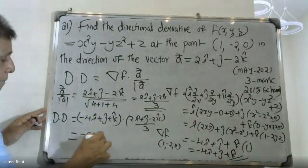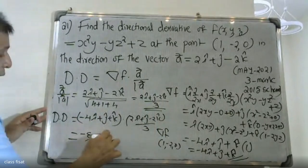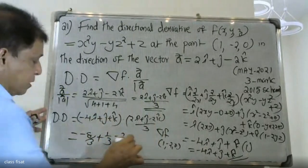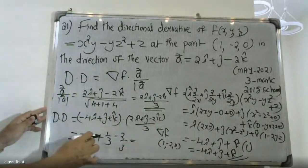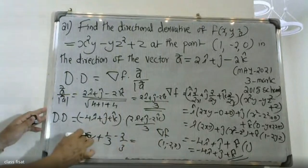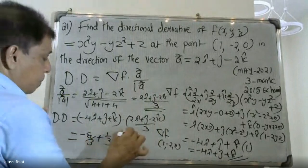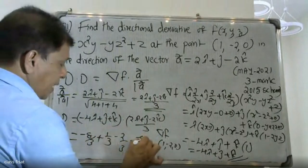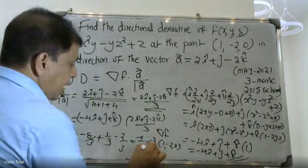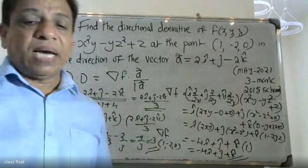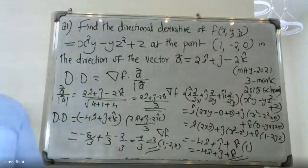That's 1/3 times the dot product. -4(2) + 1(1) + 1(-2) = -8 + 1 - 2 = -9. So -9/3 = -3.